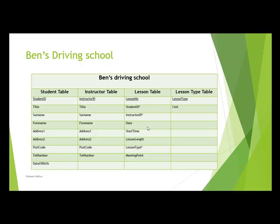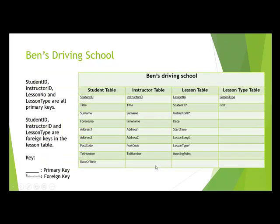We also need to identify our foreign keys. In the lesson table we bring in student ID and instructor ID, making this our booking table where we list the lesson details along with which student and instructor are booked. So student ID and instructor ID become foreign keys. We also add a fourth table for lesson type, where lesson type is the primary key and also appears as a foreign key in the lesson table.